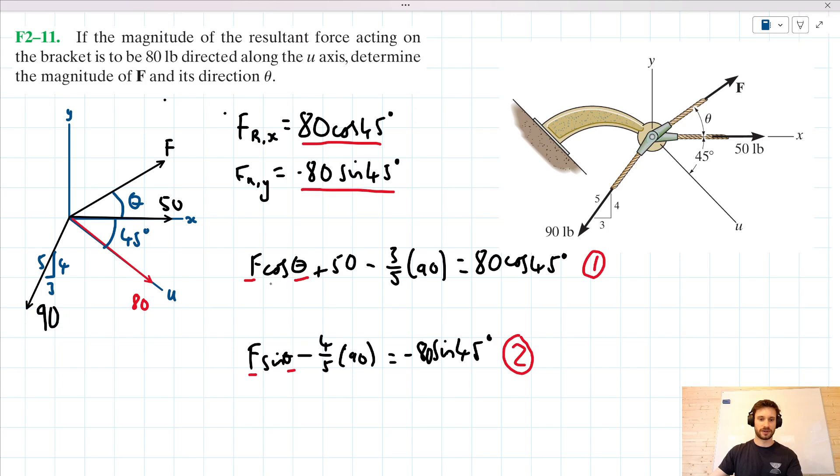For example, in this first equation, I might take this 50 and this minus 3 fifths of 90 and effectively subtract them from both sides. So that would leave me with F cos theta is equal to 80 cos 45 minus 50 plus 3 fifths of 90. And when I put that into my calculator, it gives me a value of 60.6. So in the bottom left corner, let's just keep that there. 60.6 equals F cos theta.